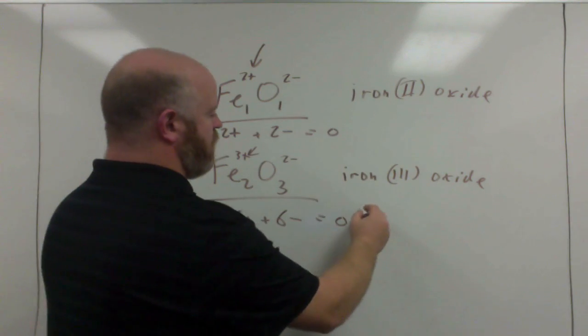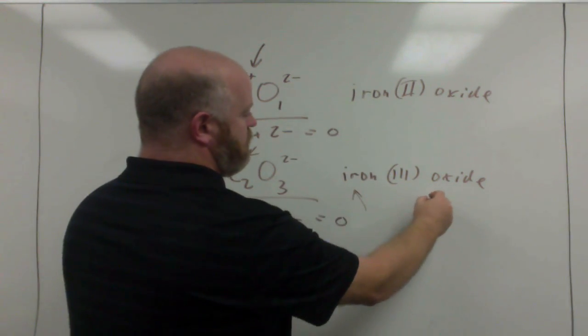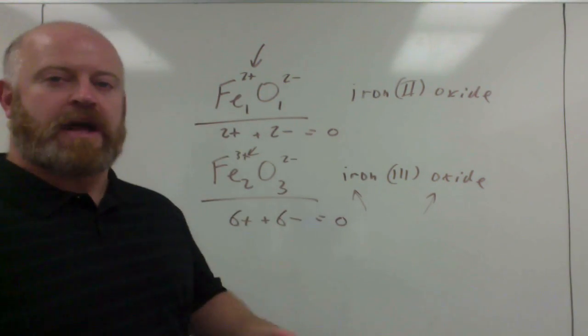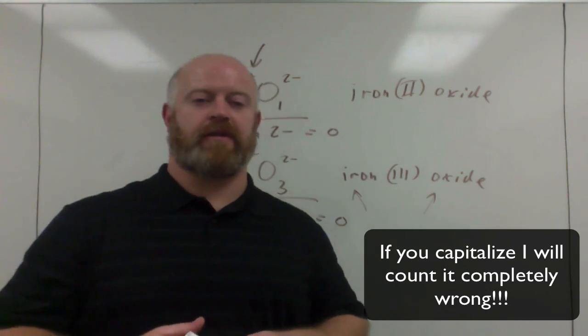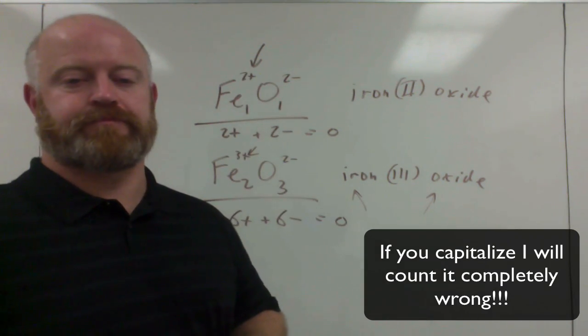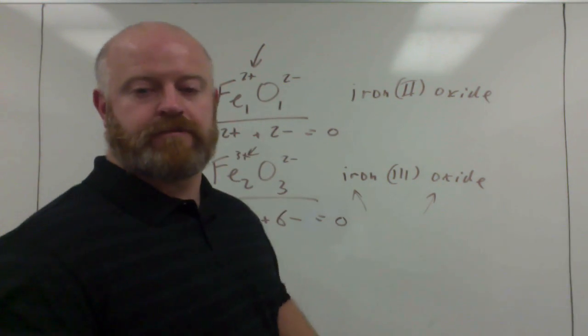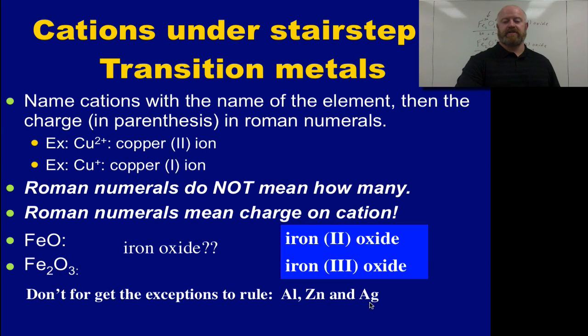In the naming system, notice how we are not capitalizing anything. These are not proper nouns, so we do not capitalize those. Now, don't forget, for aluminum, zinc, and silver, aluminum is always a 3 plus, zinc is always a 2 plus, and silver is always a 1 plus, so we will not be using Roman numerals with those three metals.